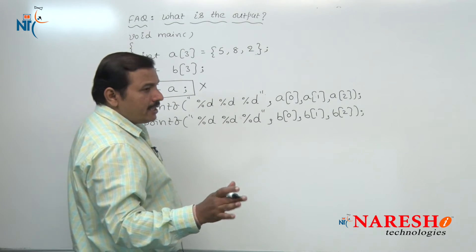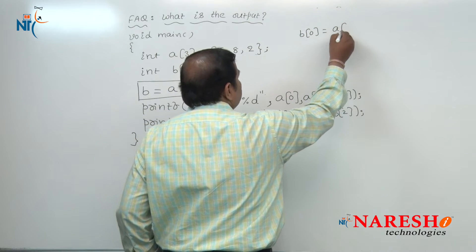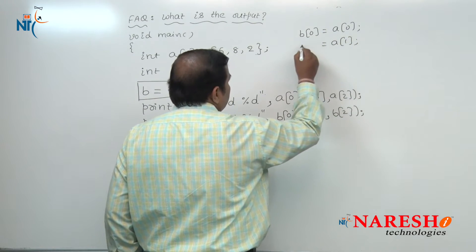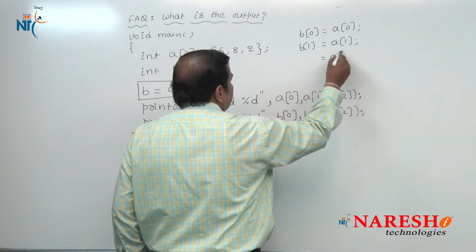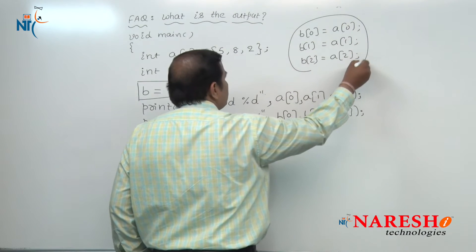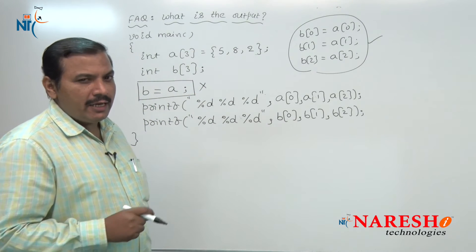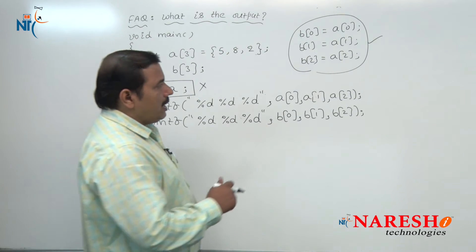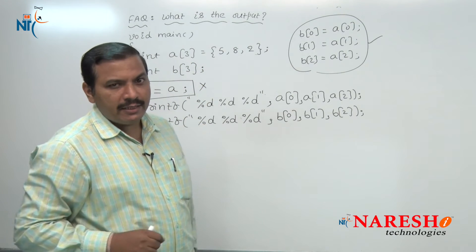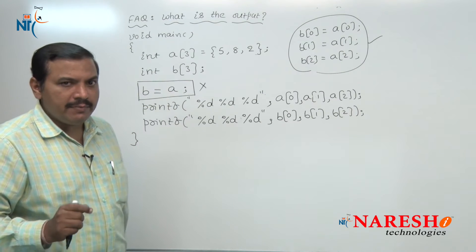The valid statements are: assign the value of A[0] to B[0], assign the value of A[1] to B[1], and so on. These are the valid statements to copy the content of integer array A into another array B. That means we can apply the assignment operator onto the individual elements of an array, but we cannot apply an assignment operator directly onto the array names A and B.